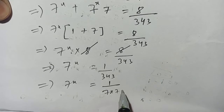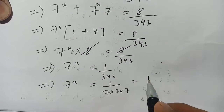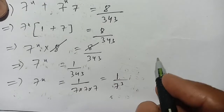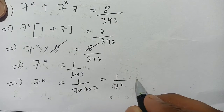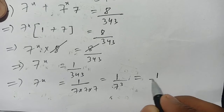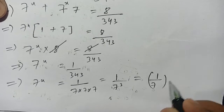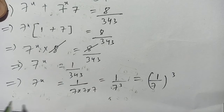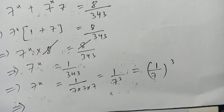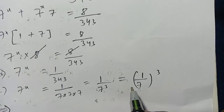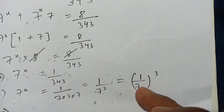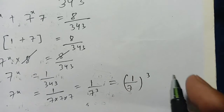Now 343 can be written as 7 times 7 times 7, which is 7 power 3. So we have 7 power x is equal to 1 divided by 7 power 3, which can also be written as 1 divided by 7 to the whole power 3.